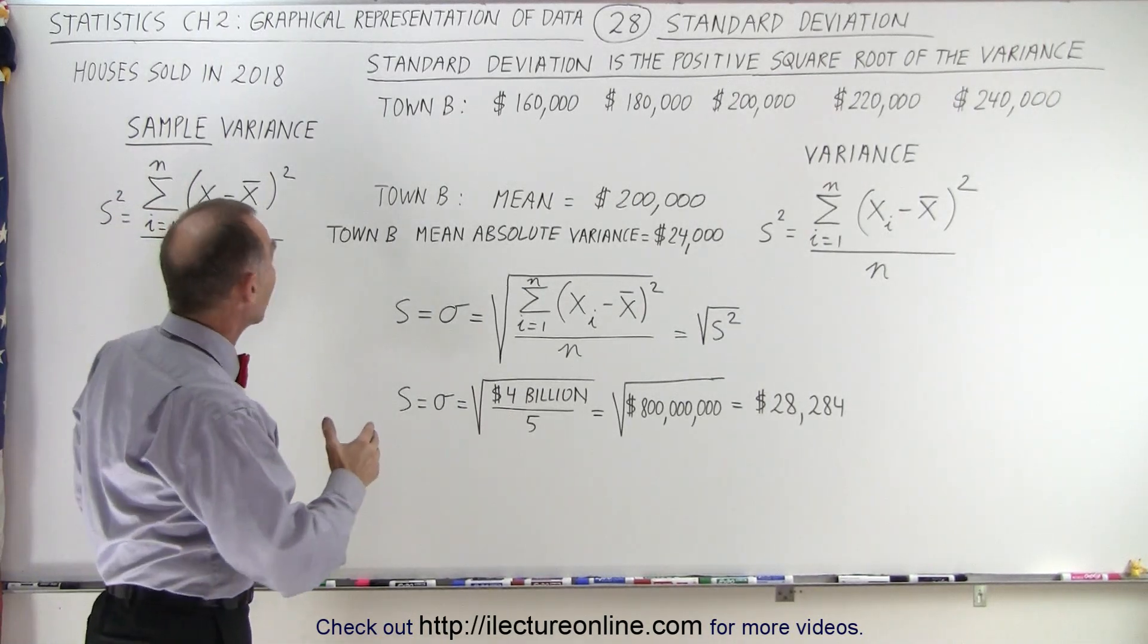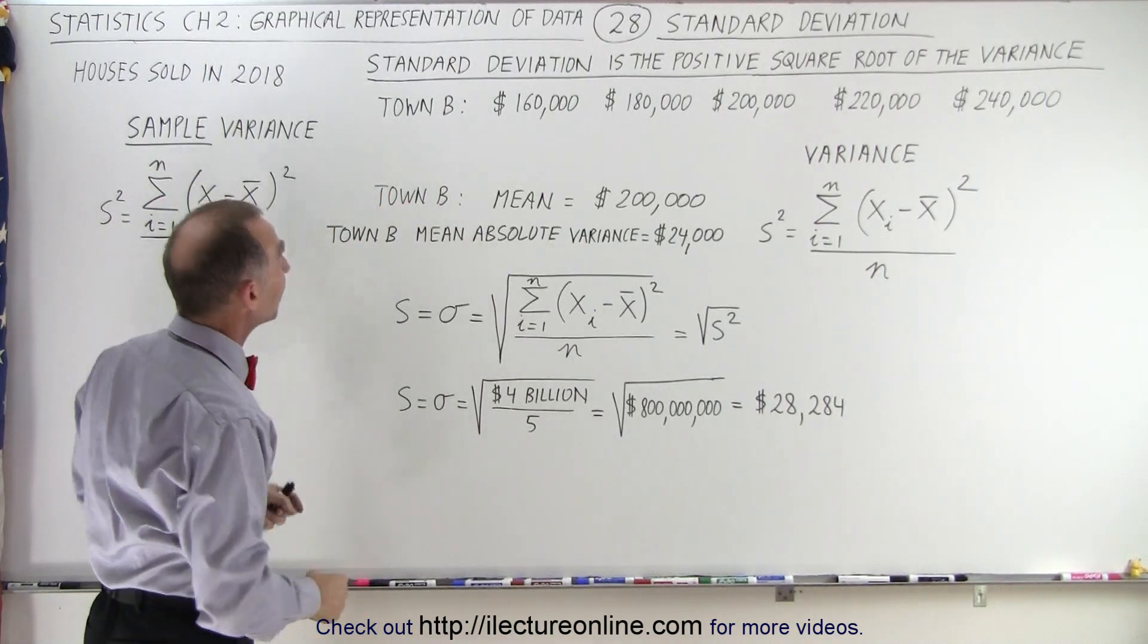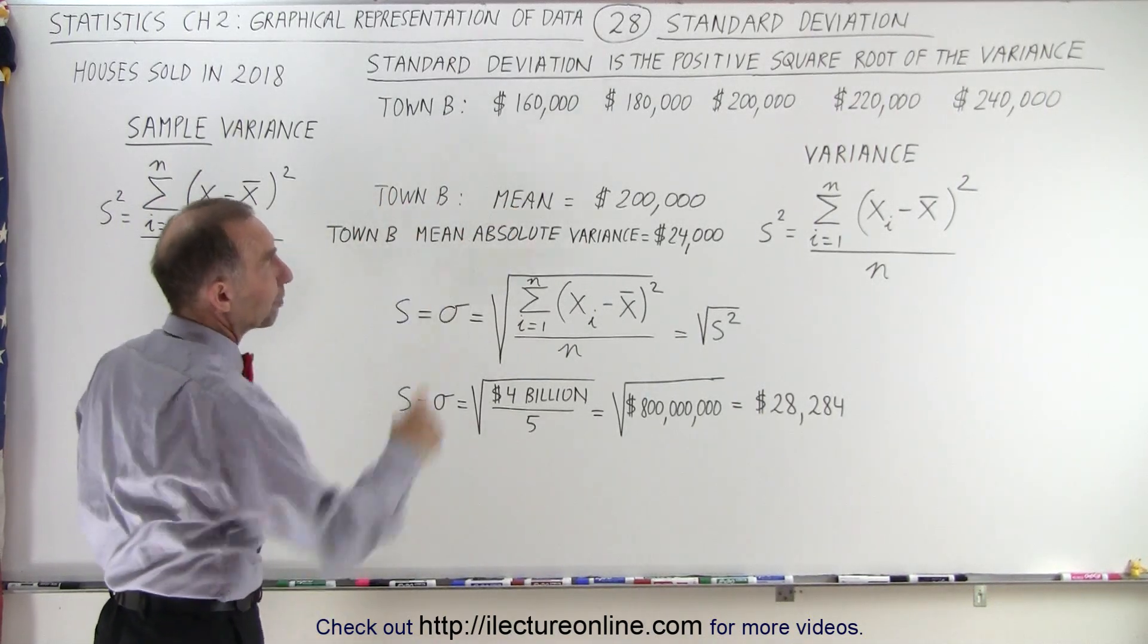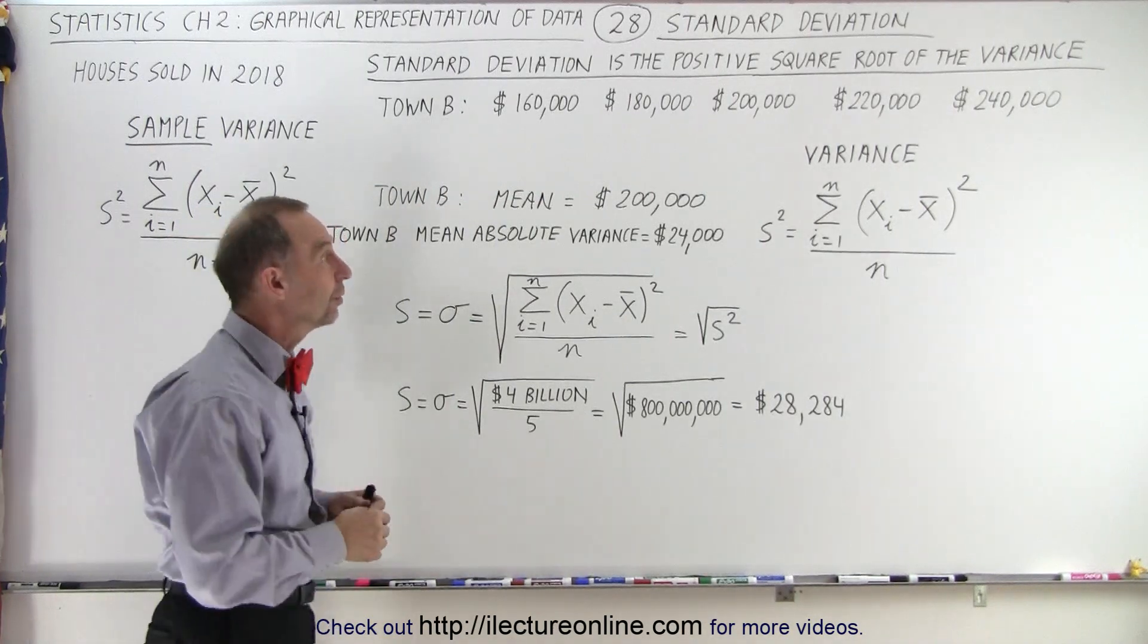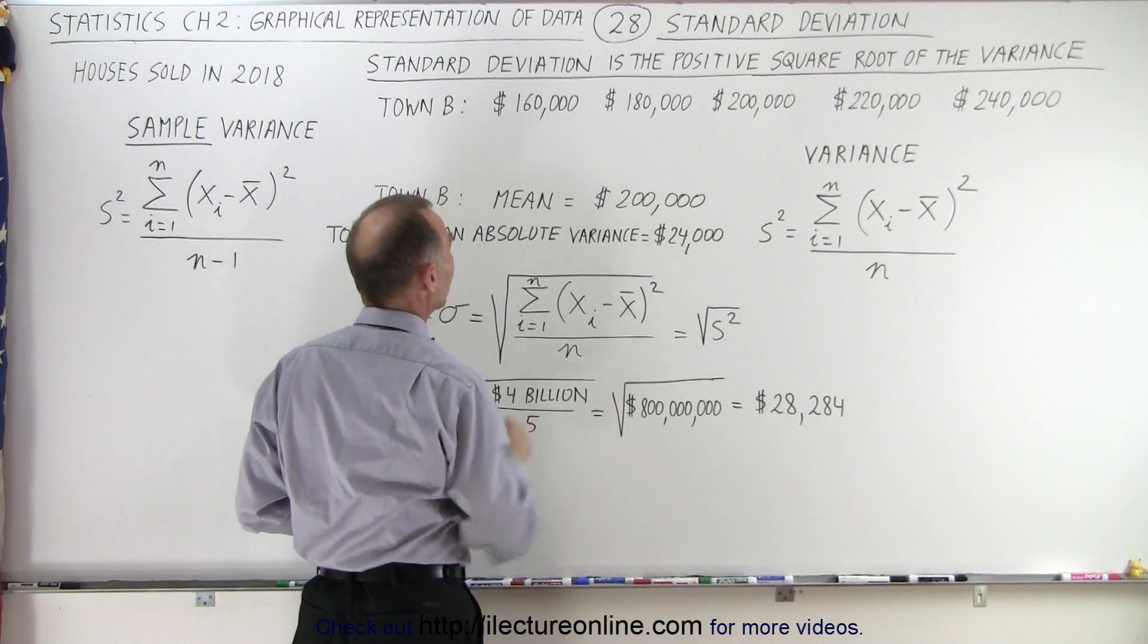In the example we used before, we had Town B that had 5 houses sold in 2018. Those are the house prices of the 5 houses sold, and we found the mean or average house price to be $200,000.